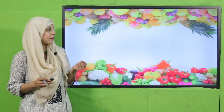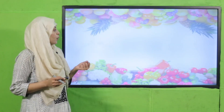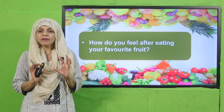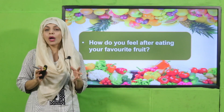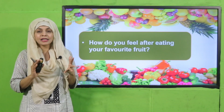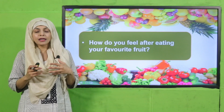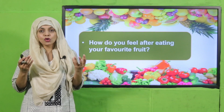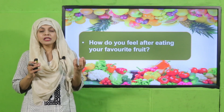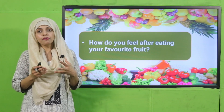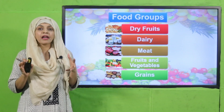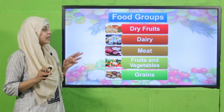My dear students, some pre-reading questions before we move on towards the reading. Quickly tell me, how do you feel after eating your favorite fruit? When you consume any favorite fruit in season and eat it, how do you feel? The food groups we are already discussing include five primary food groups: dry fruits, dairy and meat, which we covered in the previous lecture, and today we will discuss fruits, vegetables and grains.